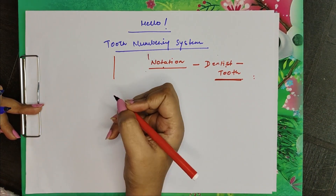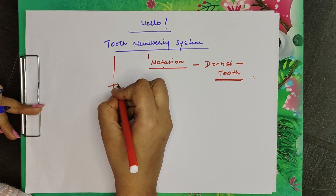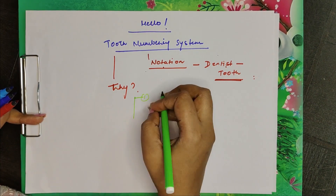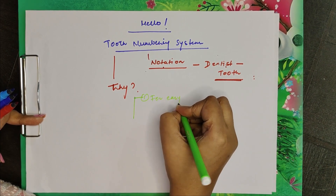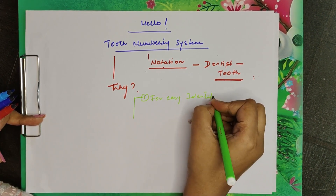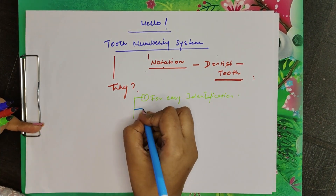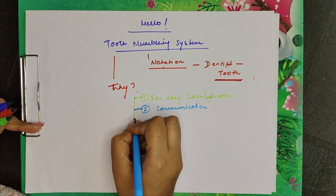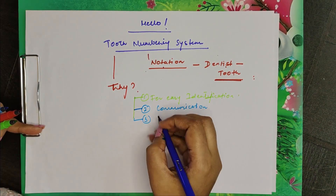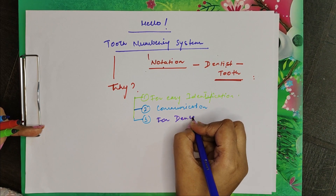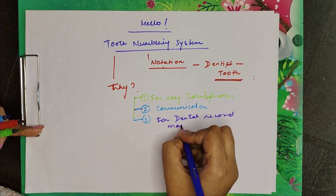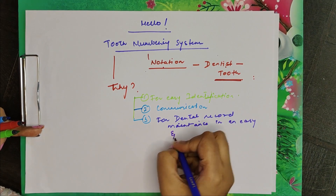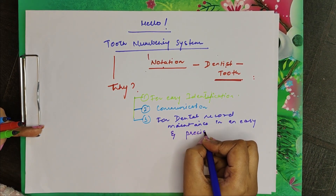Now, why do we need this? What is the purpose of this? We need this for easy identification, for communication purpose, and for dental record maintenance in an easy and precise manner.